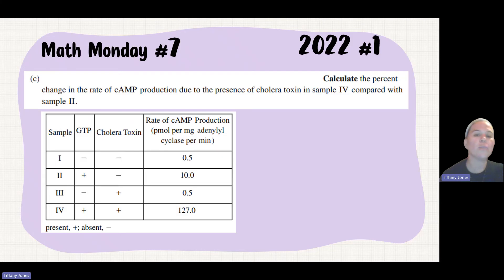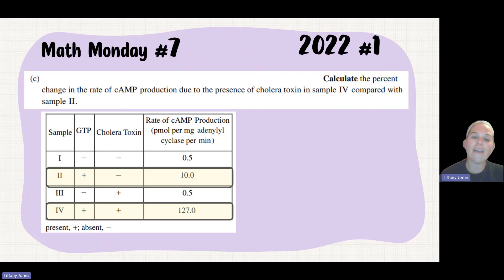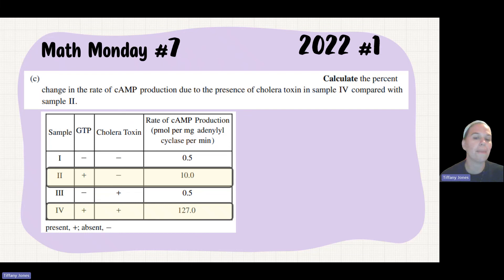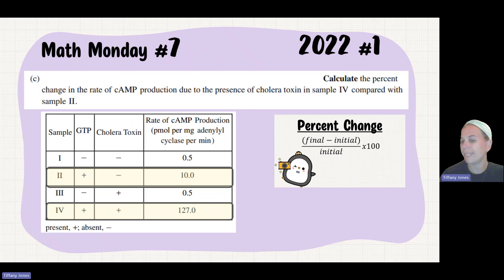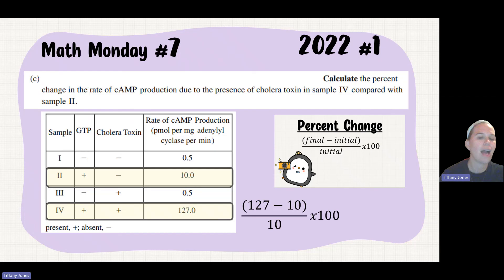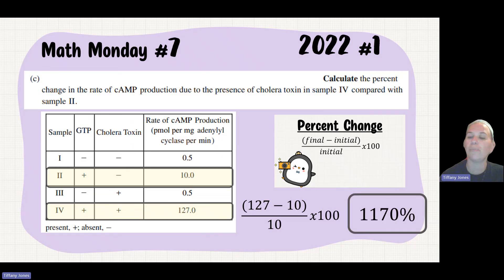It's telling us which samples to look at, so we'll go ahead and highlight those. When the cholera toxin was absent, the value was only 10, versus when cholera toxin was present, it's 127. So my initial value is 10 and my final value is 127. Using the formula — final minus initial over initial times 100 — I substitute those values: 127 minus 10, divided by 10, then multiply by 100, which gives me 1,170%.